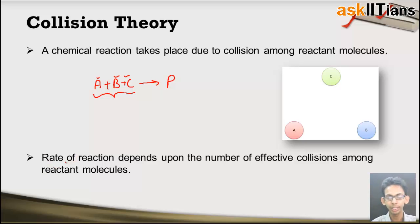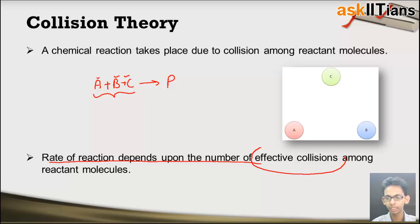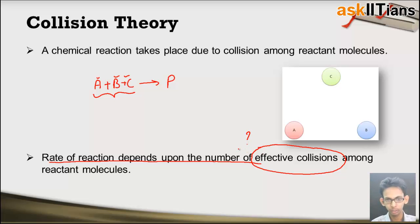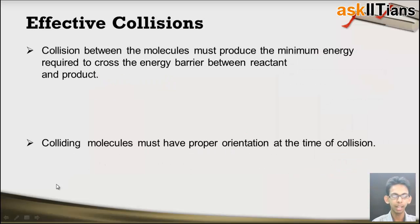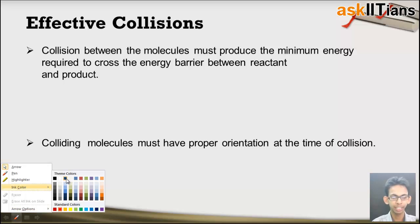According to collision theory, the rate of reaction depends upon the number of effective collisions among the reactant molecules. Now there are special types of collisions called effective collisions. Not all collisions are able to produce products. Only certain collisions which satisfy some criteria are able to produce products, and those are known as effective collisions. Let's now study about these effective collisions in detail.